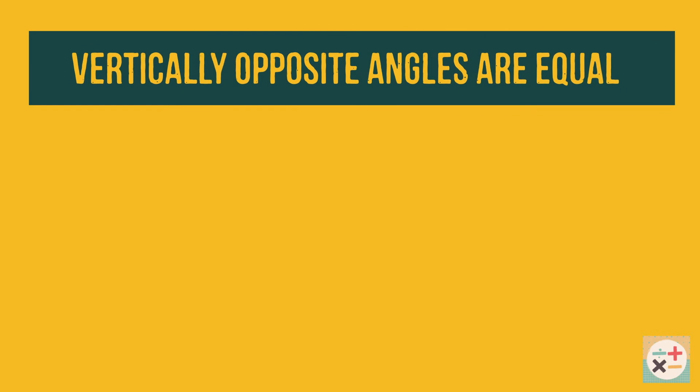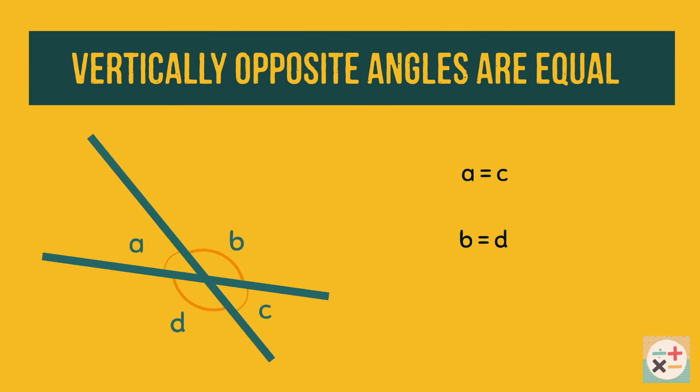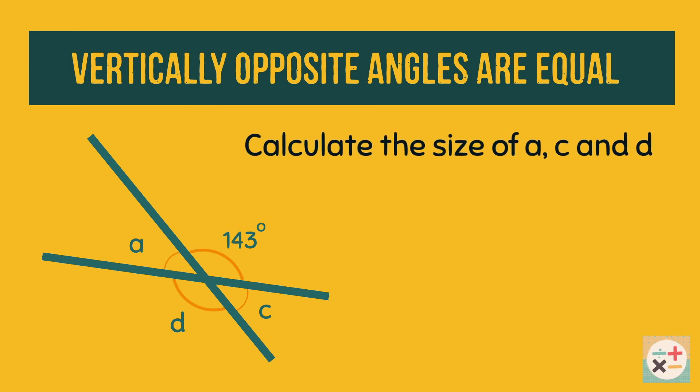When we have two straight lines which cross, the angles vertically opposite each other are equal. Here, angles A and C are equal and angles B and D are equal. Let's look at this example question. D is vertically opposite to the 143 degree angle. Therefore, D is also 143 degrees.